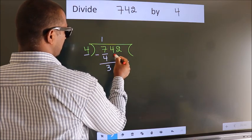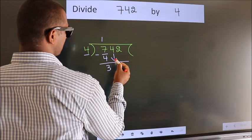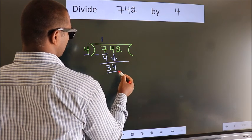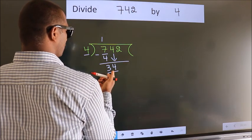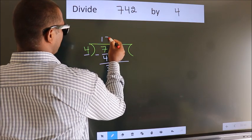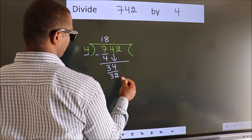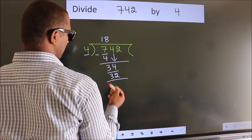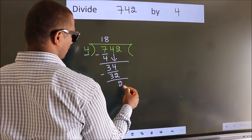After this, bring down the beside number. So, 4 down. So, 34. A number close to 34 in 4 table is 4 8s, 32. Now, we subtract. We get 2.